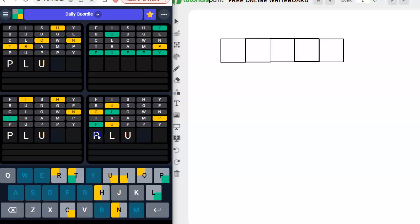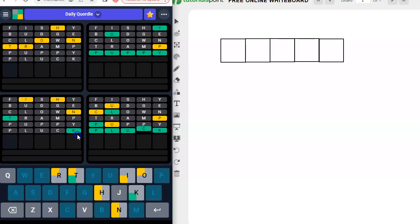Pluck. P-L-U. We can put the U there. We have to put the C somewhere. K goes really well with that. Pluck. That gave us a K here. I think I know what this one is, right?